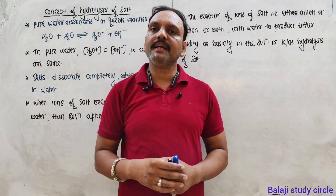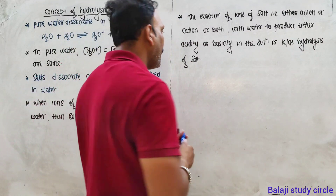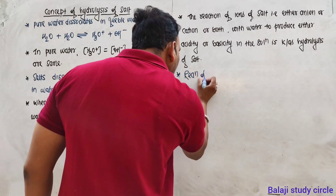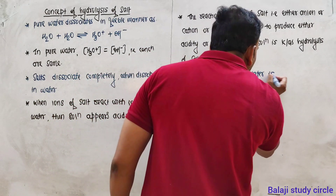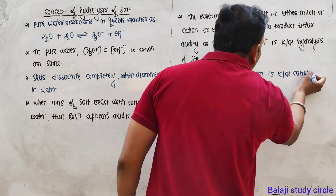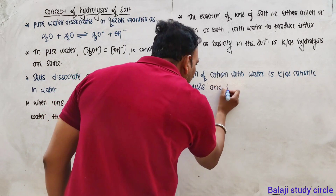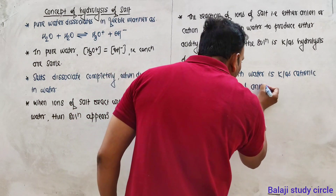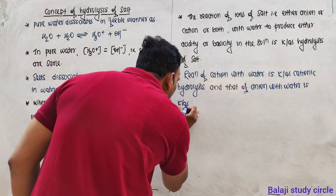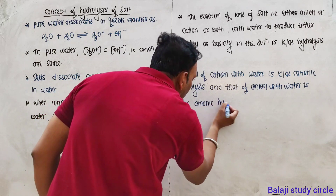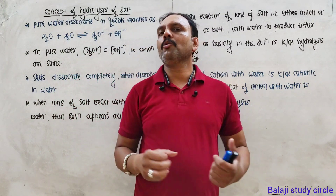If a cation reacts with water, it is called cation hydrolysis. If an anion reacts with water, it is called anion hydrolysis. So the two types are cation hydrolysis and anion hydrolysis of salt.